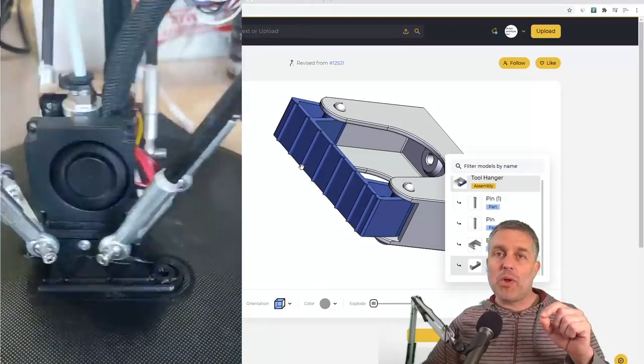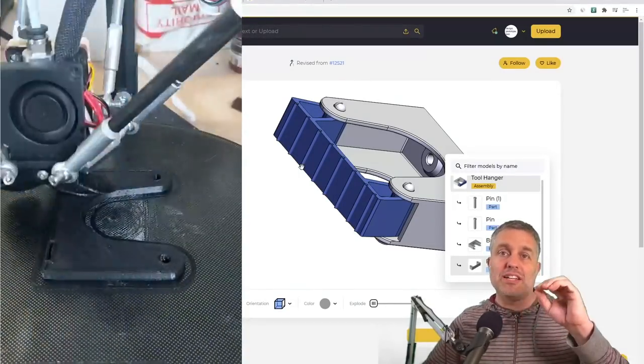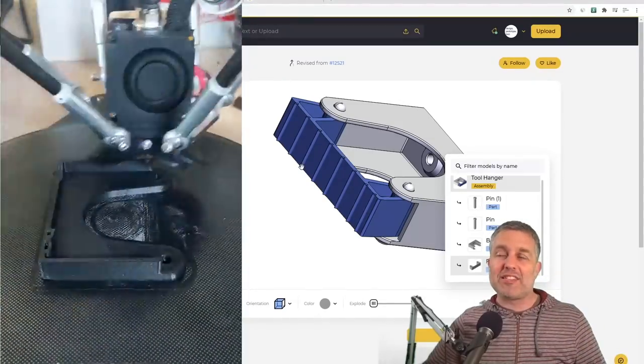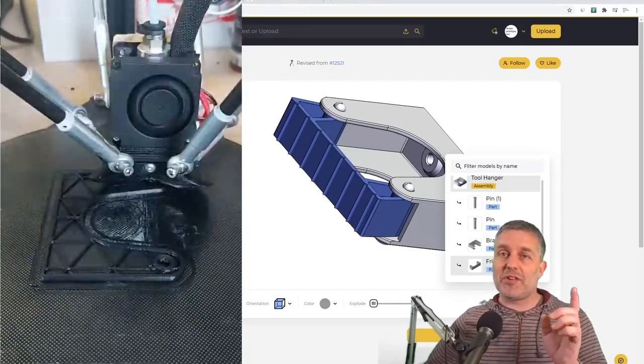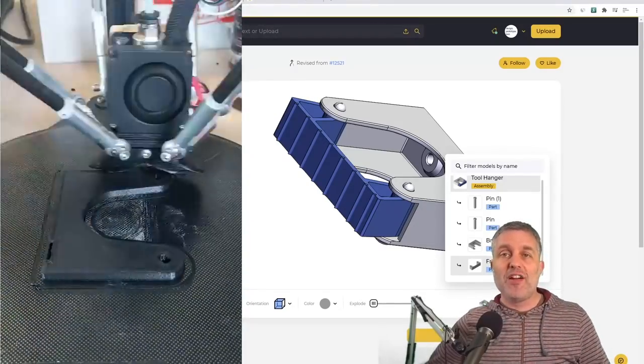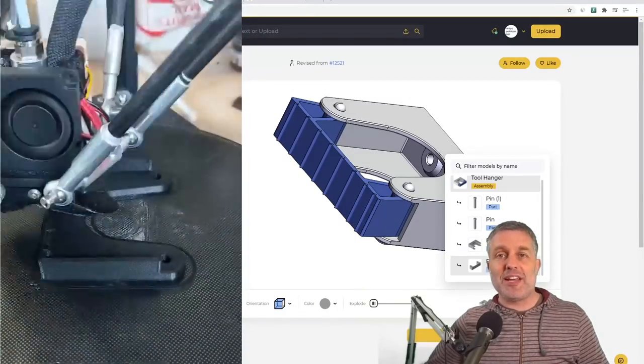We know that FDM parts are weakest in the Z direction where it can delaminate along the layer line, so we want to mitigate that. I've already redesigned with these considerations. You can see the part printing over there, so let's get this thing assembled and see if it works.